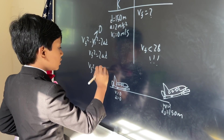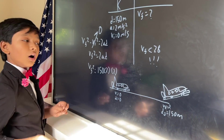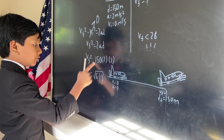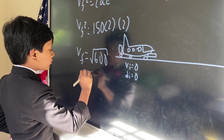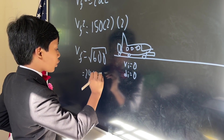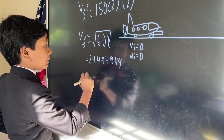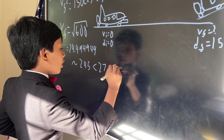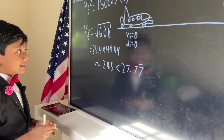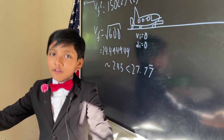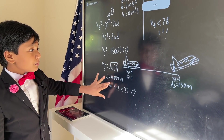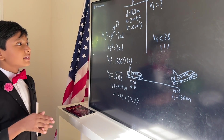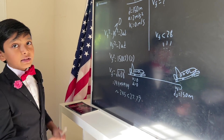So vf squared equals 2 times 2 times 150, giving us vf equals the square root of 600, which comes out to approximately 24.5 meters per second. That is obviously less than 28 meters per second, so the runway is a no-go. The runway is insufficient.